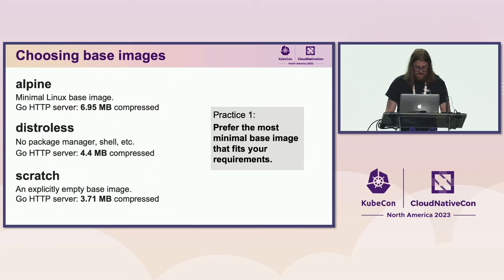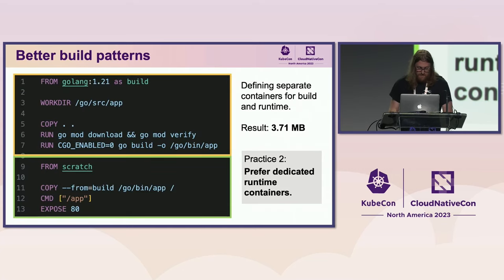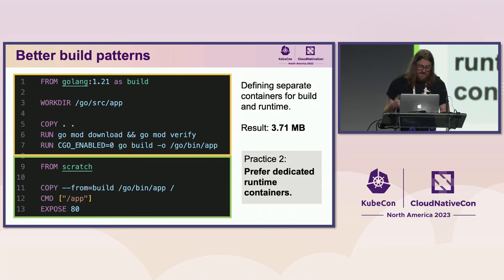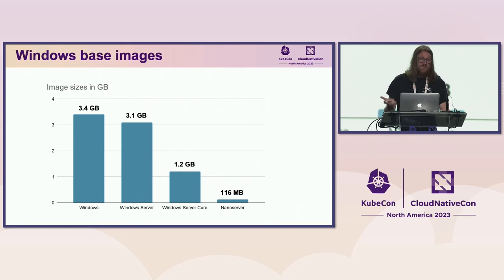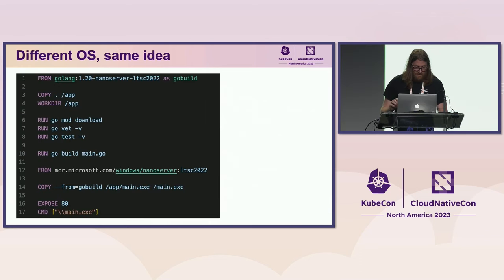Which brings us to our second practice: multi-stage builds. In the top half of this Dockerfile, we're using the big Debian base image to build our binary, and then in the bottom half, copying it over to a new runtime image built from scratch. This is most pertinent to compiled languages like Go, but even containerized Python apps might use multi-stage builds with tools like PEX. For Windows containers, Microsoft provides four base images ranging from the 3.4 gigabyte Windows image that includes the complete Windows API set, down to the 100-odd megabyte Nano Server image tailored to new applications, microservices, and apps with minimal dependencies. We can take advantage of multi-stage builds here as well — for example, building from a Golang Nano Server image and then running from baseline Nano Server.